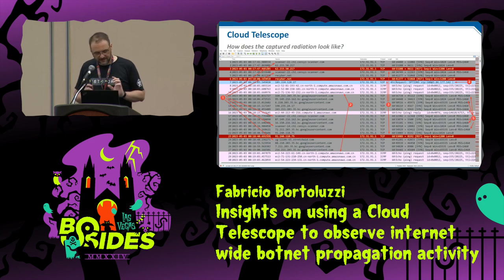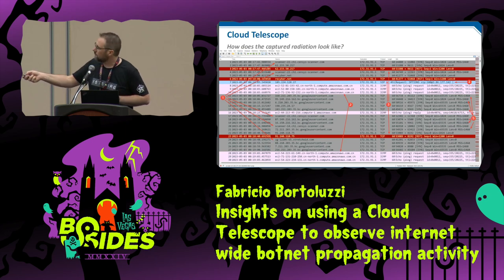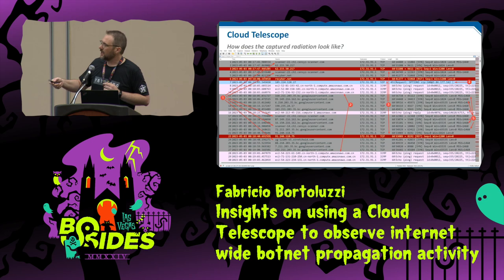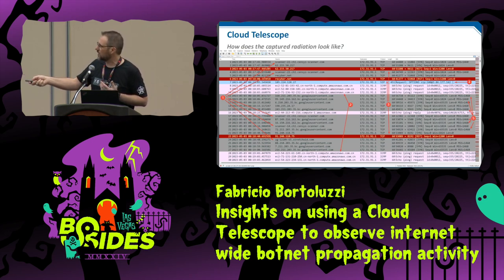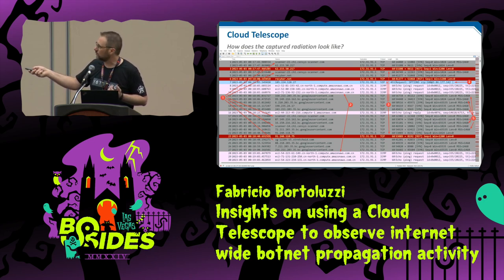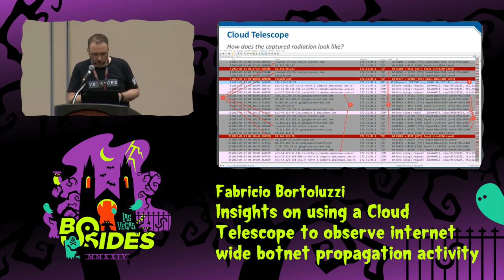Moreover, you can see public scanners, many ping requests arriving from sensors in another region — for example, a US sensor being queried with ICMP packets coming from Amazon in China. You can also see old-style SIP/Asterisk VoIP attacks using UDP communication on the SIP port. That's how a sample looks once you deploy the telescope.